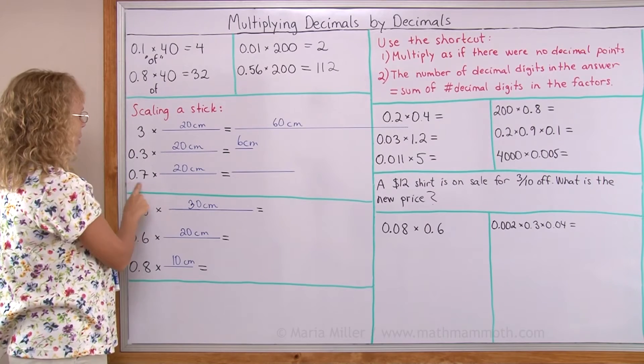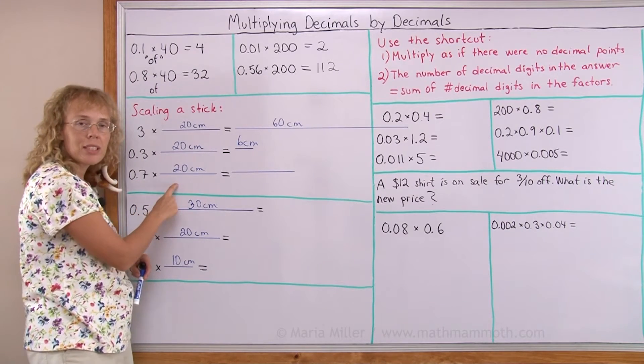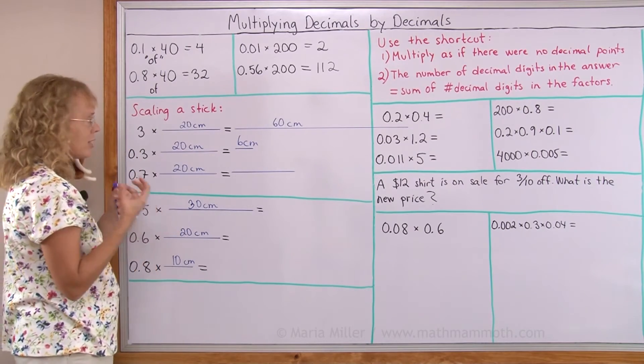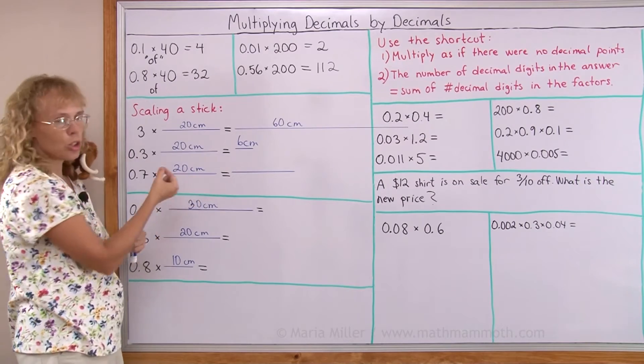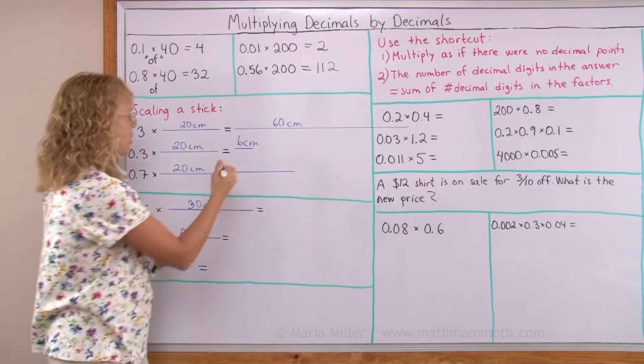The same thing will happen here. We are multiplying it by 7 tenths. 7 tenths of 20 centimeters will be less than 20 centimeters. Again I can think of the tenth part. 1 tenth of 20 is 2 centimeters. So 7 tenths is 7 times 2 or 14 centimeters.